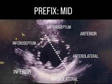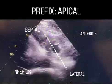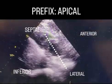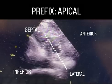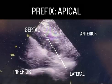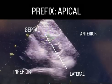We then move the probe down to the apex where we see the apical septum, the apical anterior, the apical lateral, and the apical inferior walls.